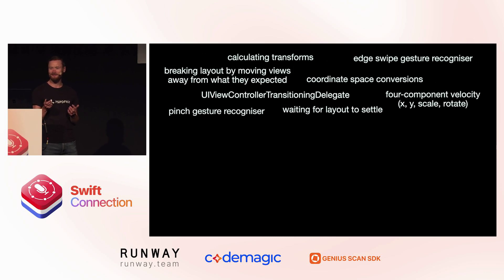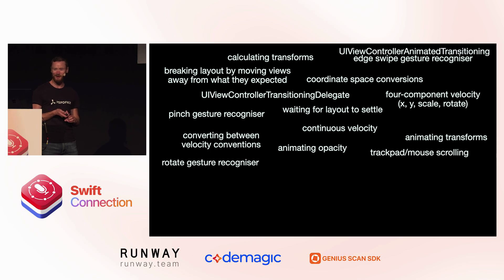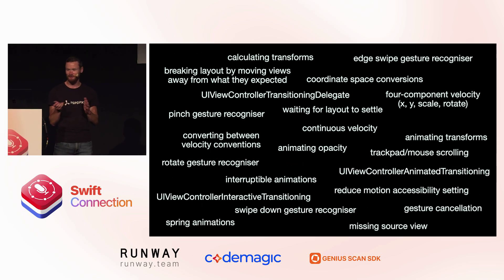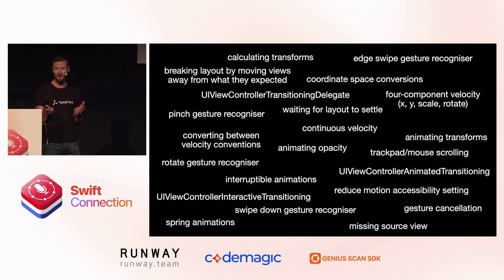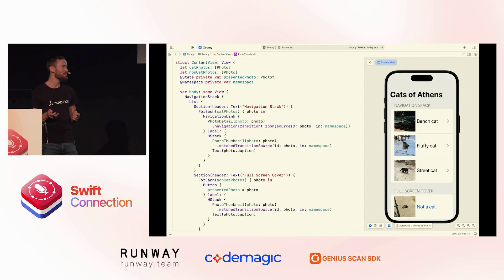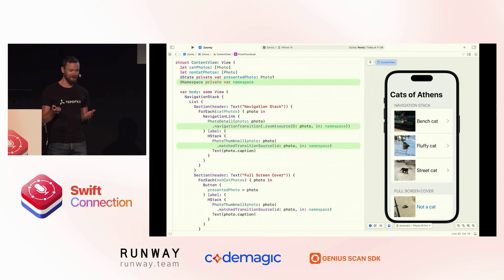How would we go about implementing something like this? Well, there are a few things we might need to take care of — all these different dismissal gestures, getting the animation perfect. Chris's talk would help with some of this, but there's still a lot more to do. Of course, in the iOS 18 SDK we can get this kind of effect with just three lines of code.